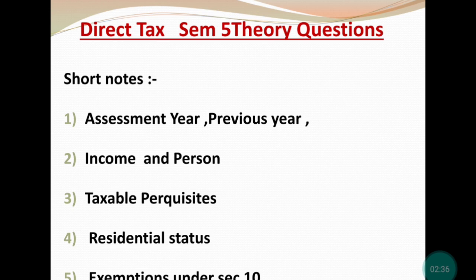Next is taxable perquisites — यह salary chapter में मिलेगा, Section 17 के base पे। Perquisites मतलब additional benefits — तो taxable perquisites की list पढ़ लें और उस list को short note में लिखना है।